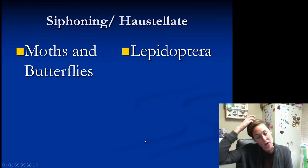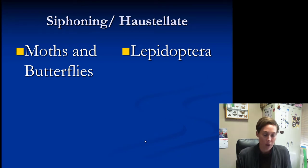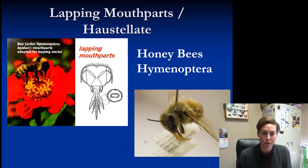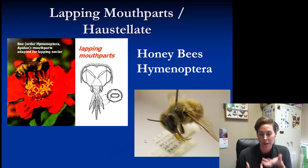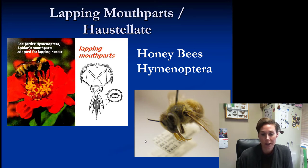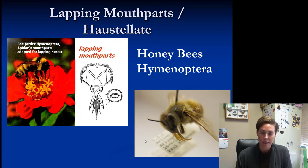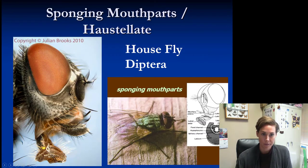Siphoning mouthparts — also considered haustellate — are moths and butterflies, which are in the Lepidoptera group. Other insects have lapping mouthparts. Only honey bees have lapping mouthparts. It's really similar to a butterfly's mouthpart, but instead of being long and skinny and rolling up under the chin, they're much shorter. So butterflies can access flowers that are really deep, but a bee prefers a flower that's a bit more open so it can reach the nectar. Hymenoptera — the honey bees — have lapping mouthparts.